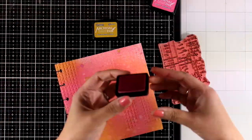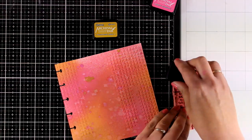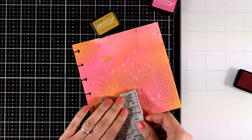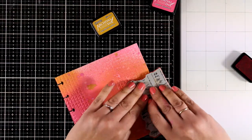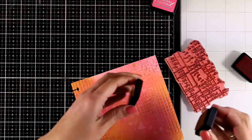I'm going to do some stamping. For that I'm using two archival inks from the new line by Tim Holtz. Again, I'm using the same two colors, Picked Raspberry and Fossilized Amber.